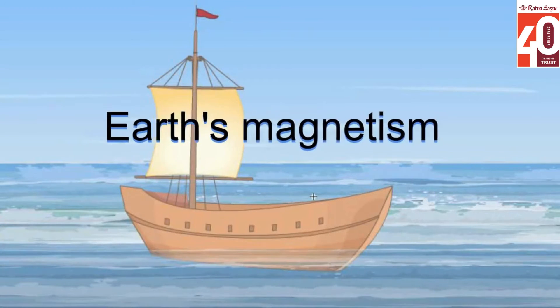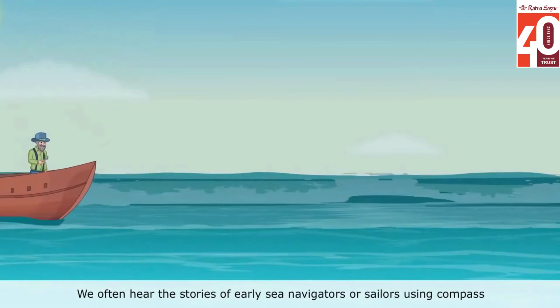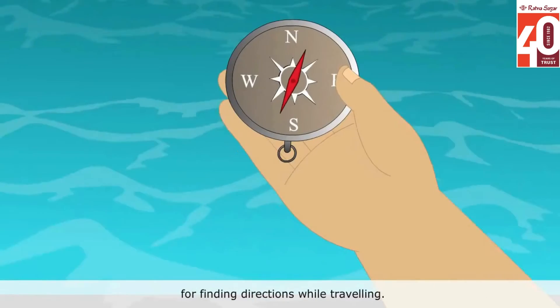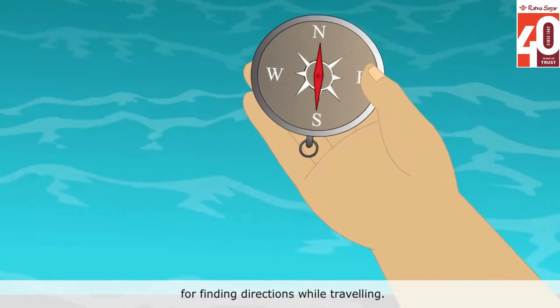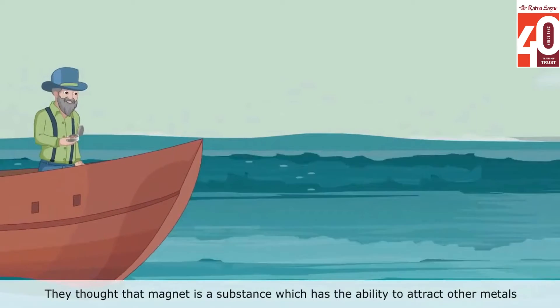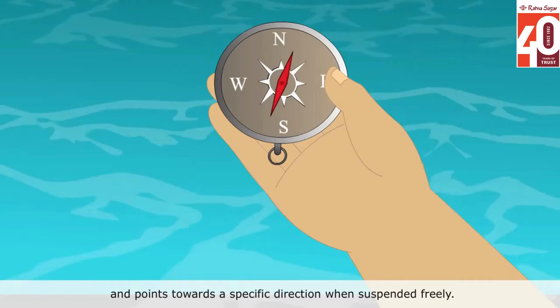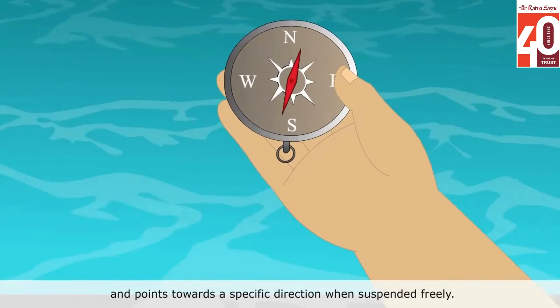Earth's magnetism: We often hear the stories of early sea navigators or sailors using a compass for finding directions while travelling. They thought that magnet is a substance which has the ability to attract other metals and points towards a specific direction when suspended freely.